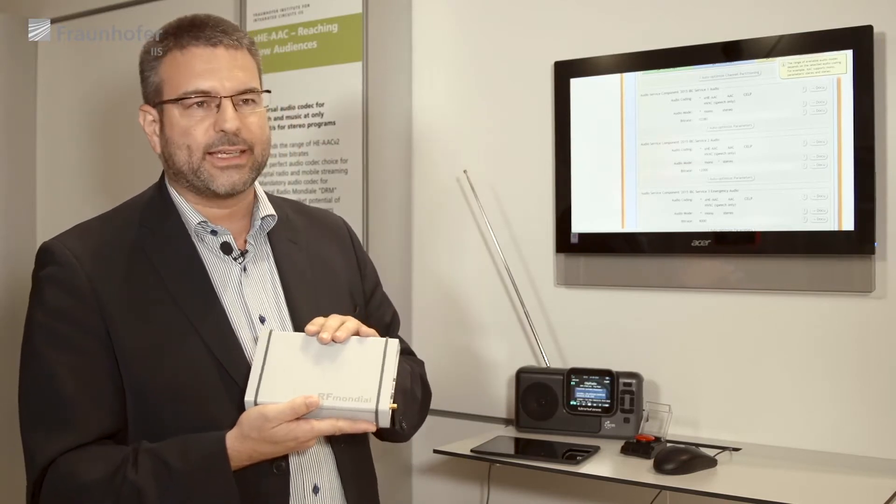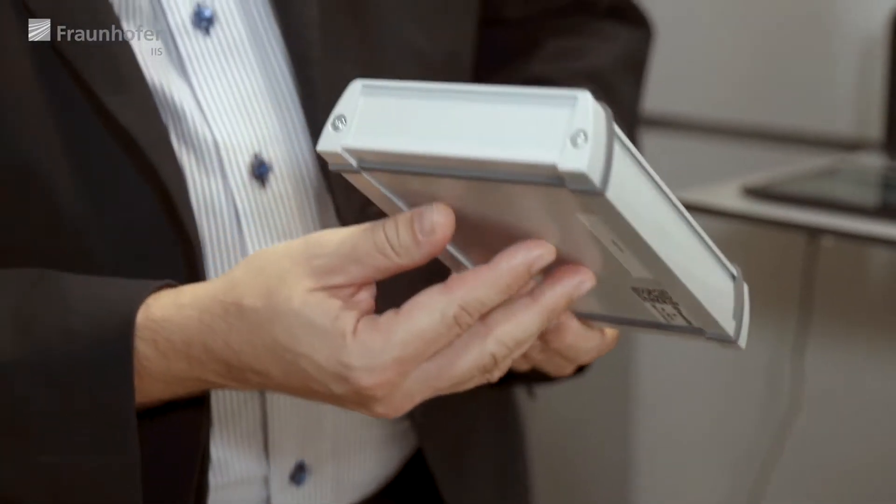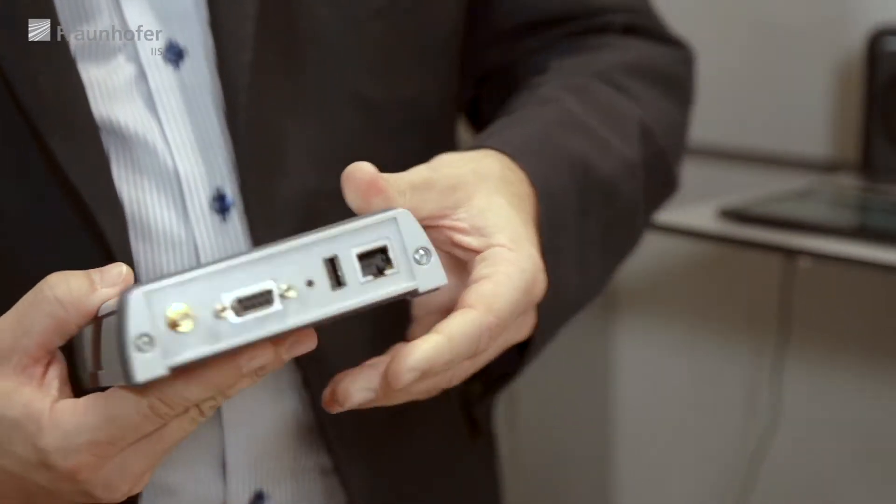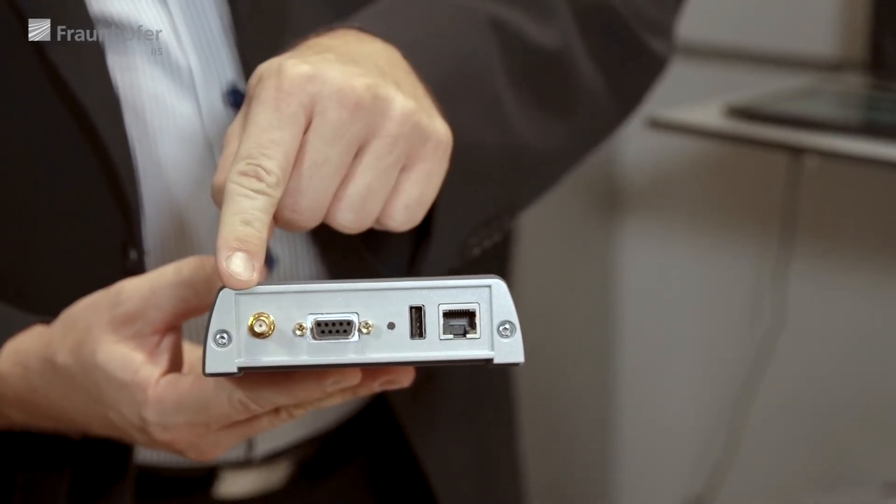This device is a full DRM receiver with simple antenna input and power inputs. All the rest of the communication is done through Bluetooth and Wi-Fi.